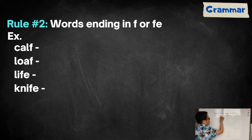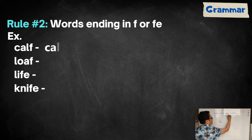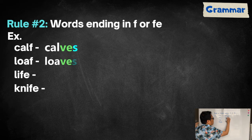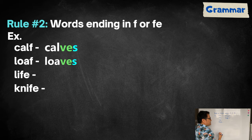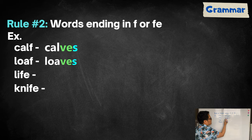For example, calf will become V-E. Loaf, F there, will become V-E, and then you have to put s at the end of the word. So, calf becomes calves, loaf becomes loaves.